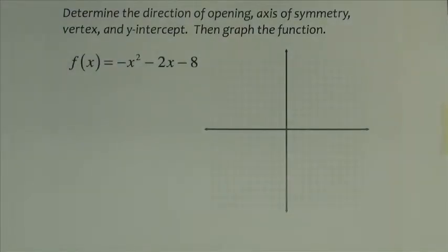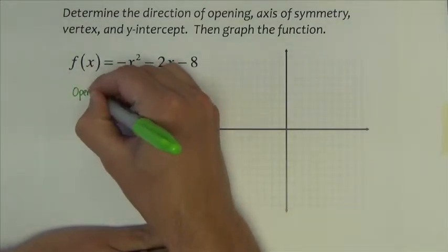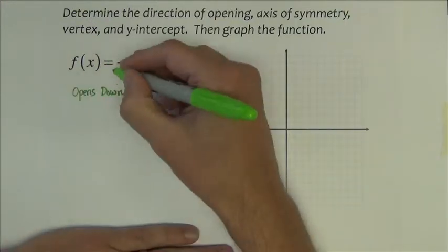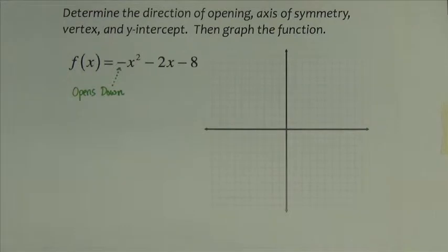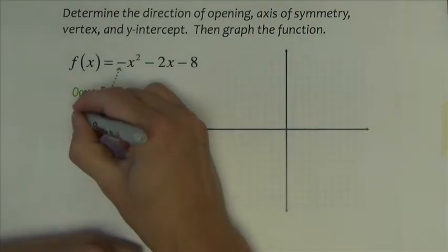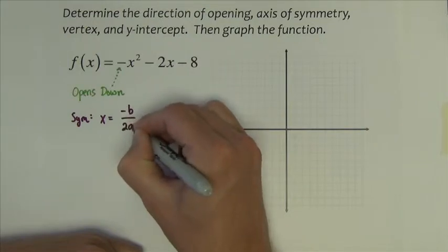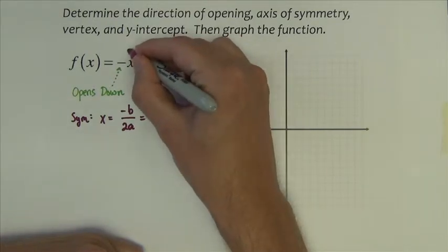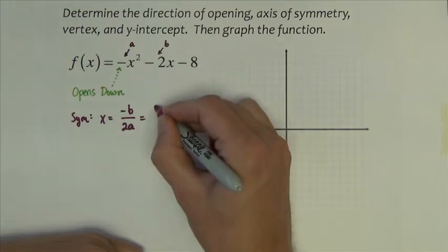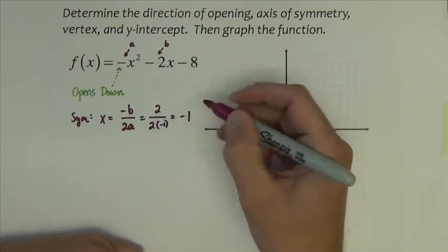In this first example, it says determine the direction of opening, axis of symmetry, vertex, y-intercept, and then graph the function. The direction of opening: this graph opens down because it has a negative in front of the x squared. If that negative wasn't there, it would open up. For the axis of symmetry, we use x equals negative b divided by 2a. Here's my b, here's my a, so it's positive 2 divided by 2 times negative 1, which is negative 1.